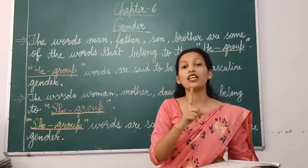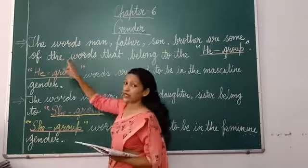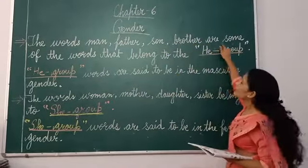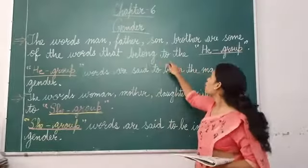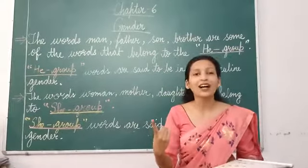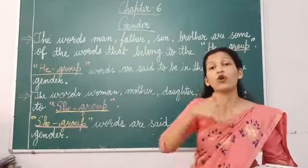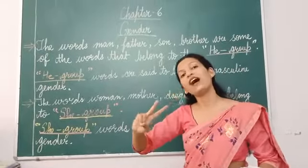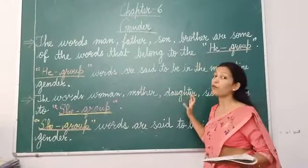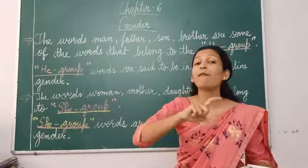So first please understand what is the he group. Please all of you look on the board. The words man, father, son, brother are some of the words that belong to the he group. All these words come under the he category — man, father, brother, uncle. All these come in the he group and are called masculine gender.